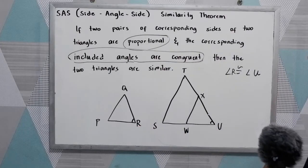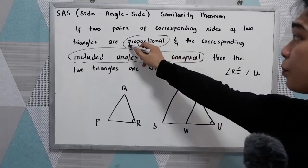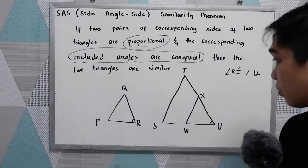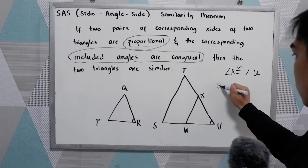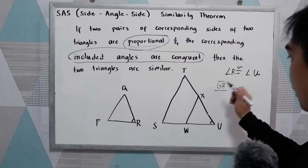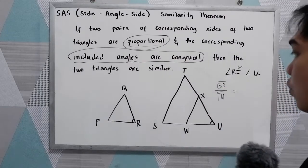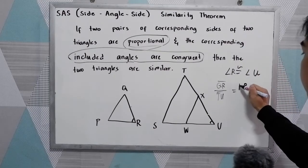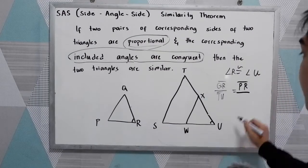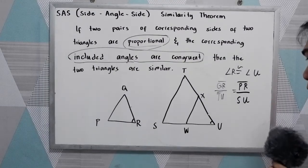The corresponding sides of the two triangles are proportional. So QR over TU must be equal to PR over SU.